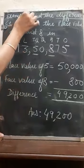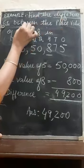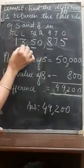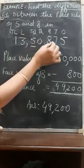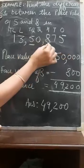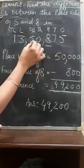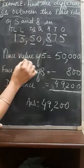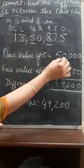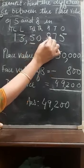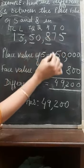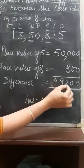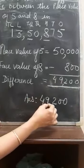In this example, find the difference between the place value of 5 and 8 in the numeral 13,50,875. Here 5 and 8 are in the same numeral. First, we find the place value of 5 at the ten-thousands place: place value of 5 is 50,000. The place value of 8 is 800. The difference is 50,000 minus 800, which gives 49,200.